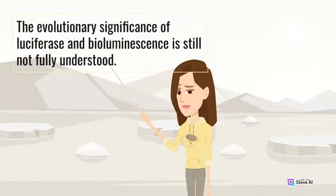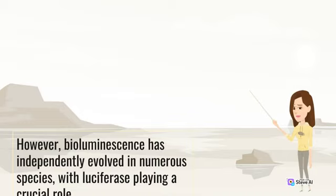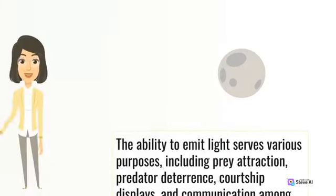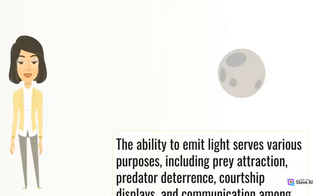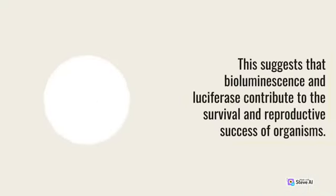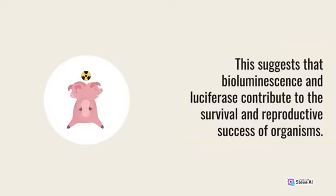The evolutionary significance of luciferase and bioluminescence is still not fully understood. However, bioluminescence has independently evolved in numerous species, with luciferase playing a crucial role. The ability to emit light serves various purposes, including prey attraction, predator deterrence, courtship displays, and communication among individuals. This suggests that bioluminescence and luciferase contribute to the survival and reproductive success of organisms.